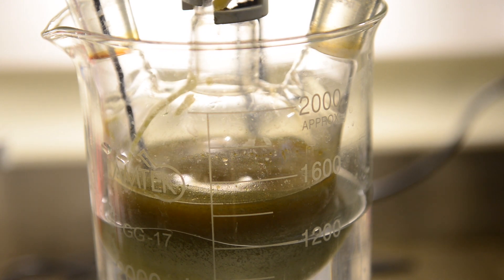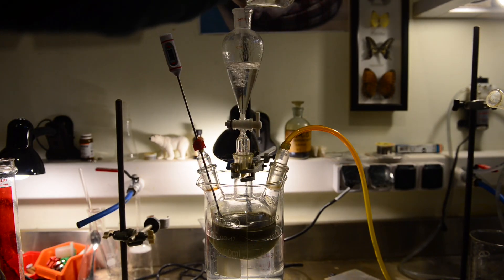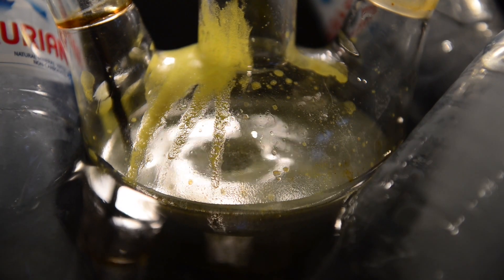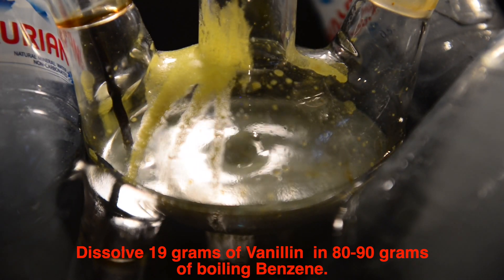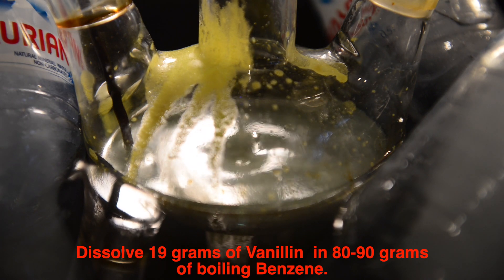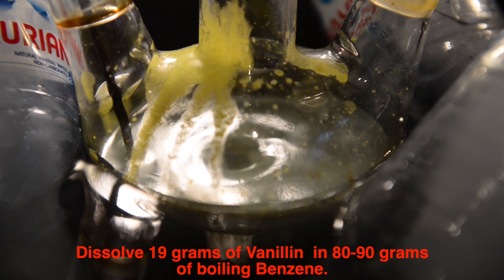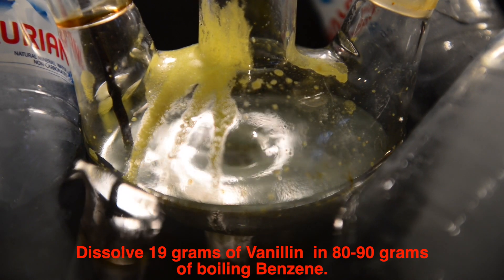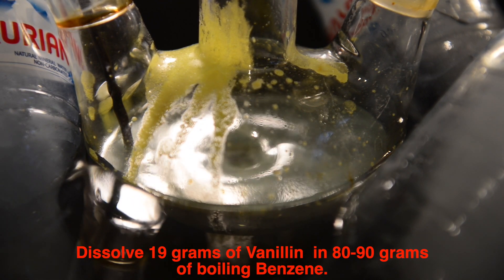Now I am ready to add vanillin. According to patent 19 grams of vanillin must be dissolved in 75 grams of nitrobenzene. As far as I am using benzene instead of nitrobenzene the solubility of vanillin decreases and requires more benzene to be fully dissolved. Instead of using additional solvent I have decided to heat benzene to boiling temperature. Near the boiling point temperature solubility of vanillin increases and little more benzene is required to fully dissolve vanillin.